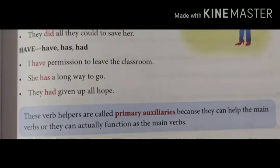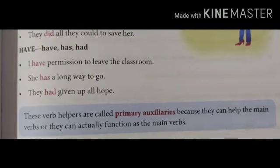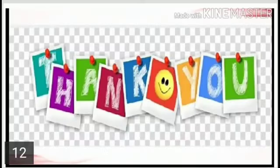Thus there are two types of verbs: main verbs and helping verbs. The verb which is independent in the sentence and carries out the meaning of its own is called the main verb, and the verb which helps out the main verb and makes its meaning clearer is called the helping verb, also known as an auxiliary verb. These verb helpers are called primary auxiliaries because they can help the main verb or actually function as the main verb. Do understand the concept and revise at home. Thank you.